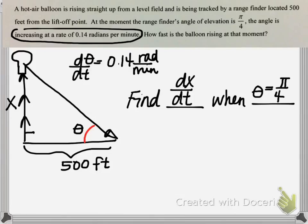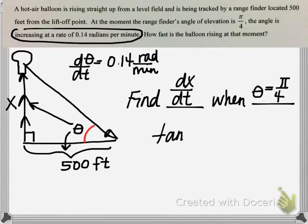You might see a right triangle and think to use the Pythagorean theorem, but the hypotenuse length is unknown and we have no information about it. Since we're interested in the angle and know how fast the angle is changing, this is actually a trigonometry problem. We're looking at the relationship between theta, the side opposite theta (x), and the side adjacent to theta (500 feet). Using SOHCAHTOA, the ratio that uses opposite and adjacent is tangent. So our relationship is: tan(θ) = x / 500.